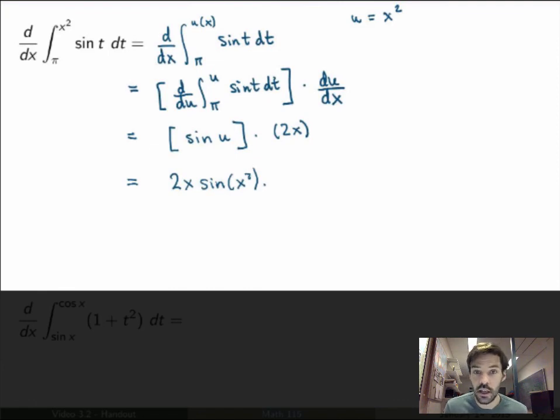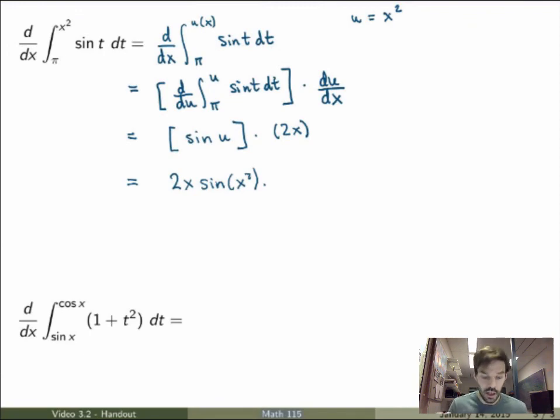So the key in this example was to combine FTC with the chain rule, which is something you may have to do in a number of examples. Alright, so let me leave you with a more complicated example. I'm not going to do it here, I'll leave that as an exercise. So if I ask you to evaluate the derivative of the integral of 1 plus t squared between sin(x) and cos(x), how would you do that? I'll leave that as an exercise.